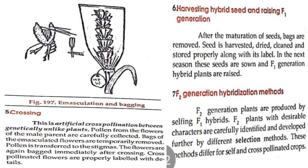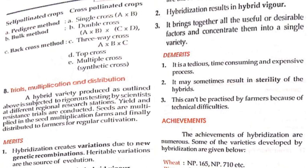Harvesting hybrid seed and raising F1 generation: after the maturation of seeds, bags are removed, seeds are harvested, dried, cleaned, and stored properly along with their labels. In the next season, these seeds are sown and F1 generation hybrid plants are raised. F2 generation hybridization method: F2 generation plants are produced by selfing the F1 hybrid. F2 plants with desirable characters are carefully identified and developed further by different selection methods. This method differs for self- and cross-pollinated crops.